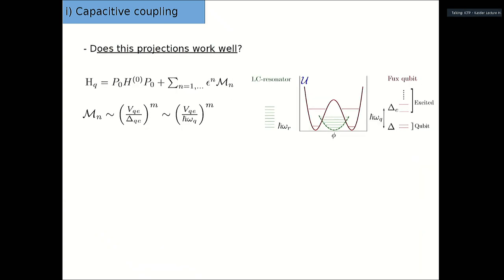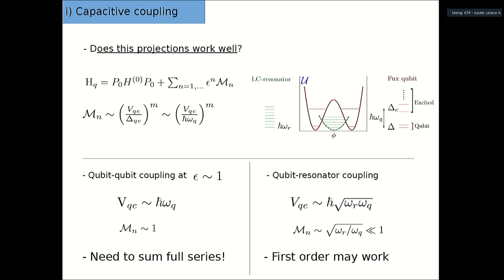But is this projection onto the qubit basis complete? Not entirely. This projection is just the first term of the effective Hamiltonian for the full superconducting qubit. You have to project onto the qubit basis, but the effective Hamiltonian has many higher-order terms — a series that accounts for virtual excitations to higher levels. Roughly speaking, some of these terms go as the amplitude for the qubit to go up to the excited state and come back. As a rough harmonic approximation, this amplitude is of order one, so we need to sum the full series.